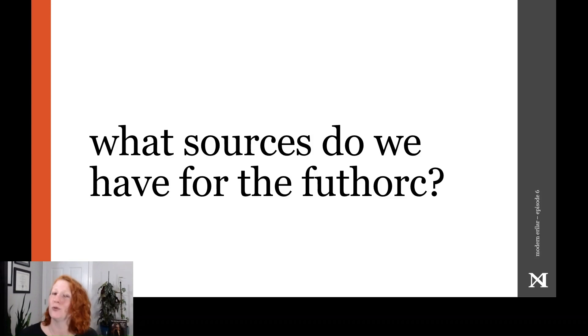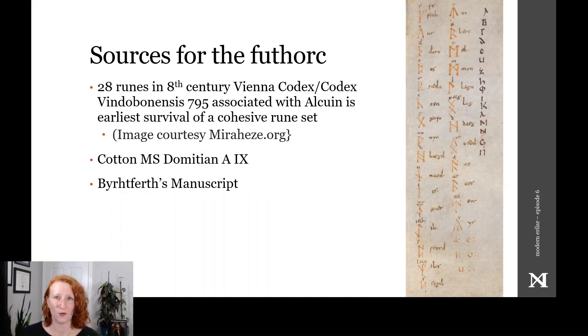Let's discuss some notable sources for this Futhork. The Vienna Codex, or the Codex Vindobonensis 795, previously called the Salzburg Codex 140, is at the Austrian National Library in Vienna. It was compiled from late 8th century material, including a Gothic alphabet, and generally associated with the monk Alcuin. It contains a descriptive compilation of 28 runes only. It represents what is likely to be the earliest surviving rune forms and Futhork order within a cohesive whole, and most reconstructions of the Anglo-Saxon Futhork rely very heavily on it.